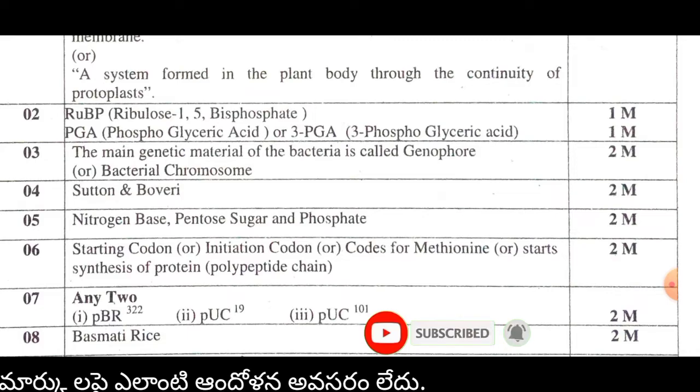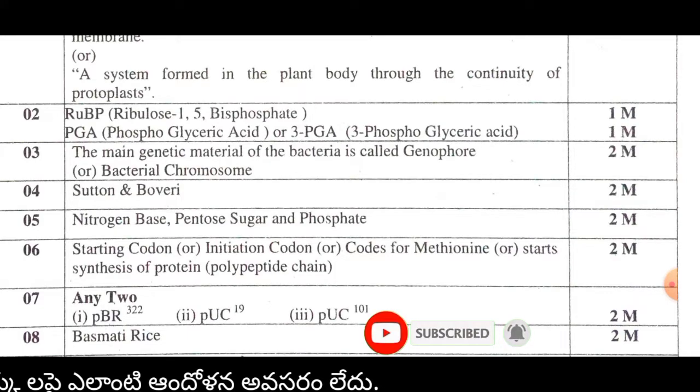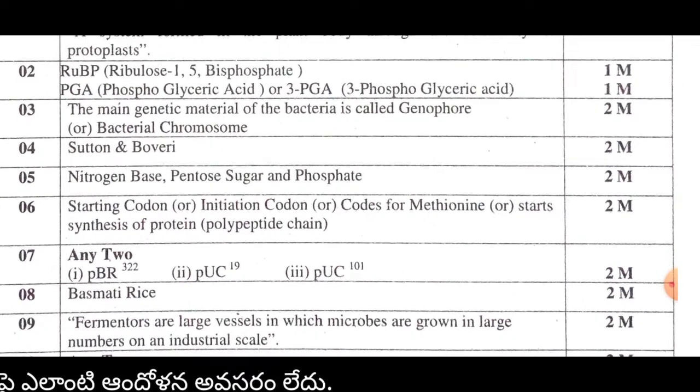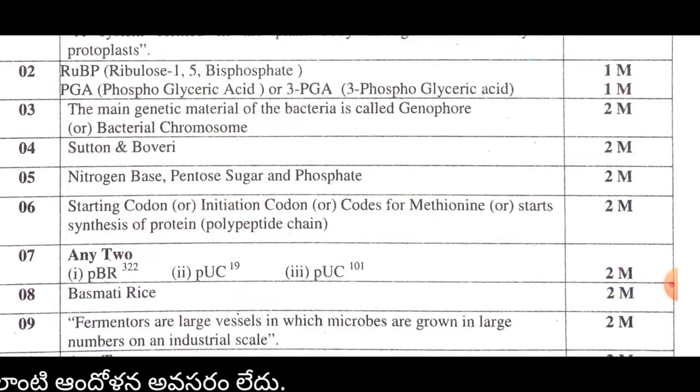The seventh question is about artificial plasmids. The examples are PBR 322, PUC 19, and PUC 101. This question carries 2 marks.